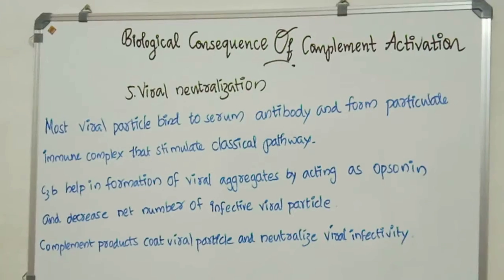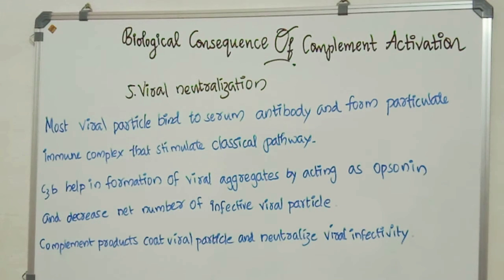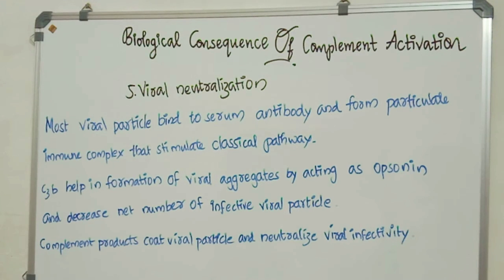Number 5: Viral Neutralization. Most viral particles bind to serum antibody and form particulate immune complexes that stimulate the classical pathway — meaning the antigen-antibody complex formation stimulates the classical pathway. C3B helps in the formation of viral aggregates and acts as an opsonin. By acting as an opsonin, it decreases the net number of infective viral particles. C3B also has receptor binding for B cells, and these B cells act as a defense mechanism by secreting antibodies. Complement products coat viral particles and neutralize viral infectivity.